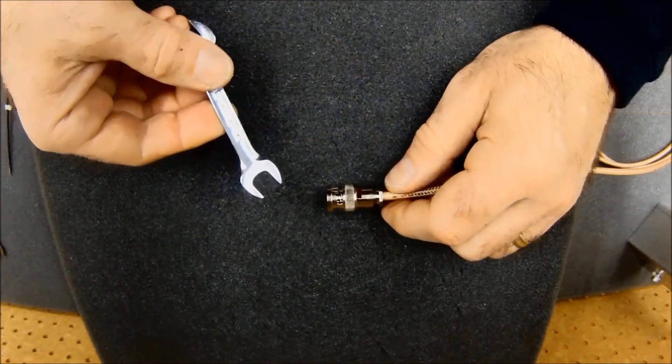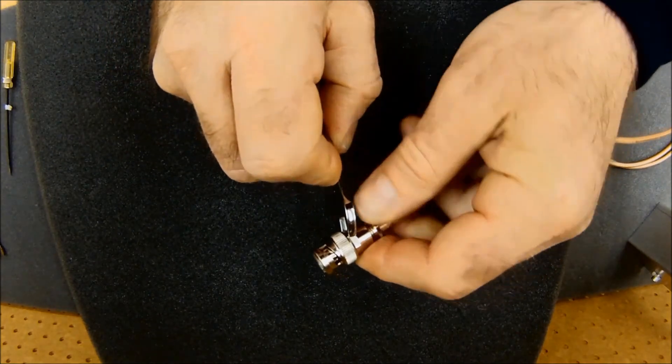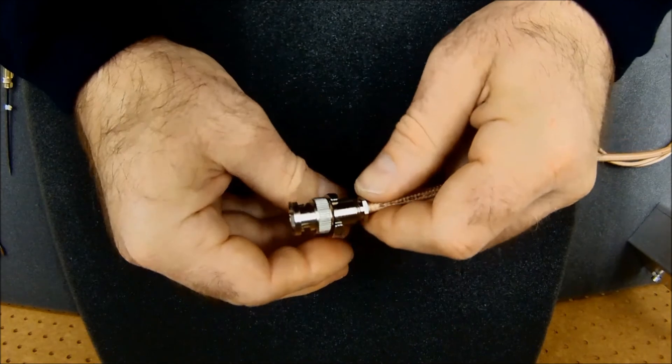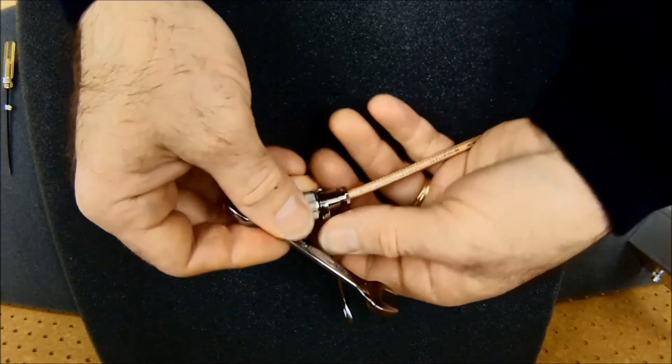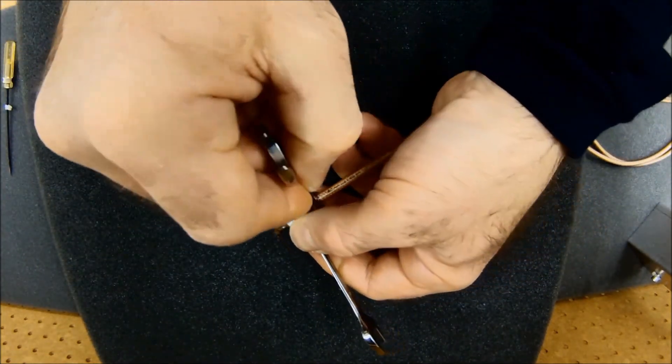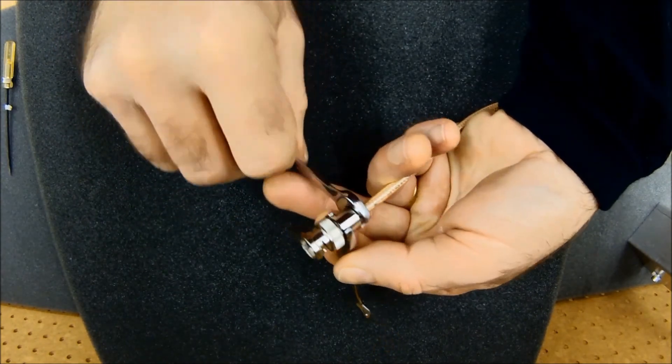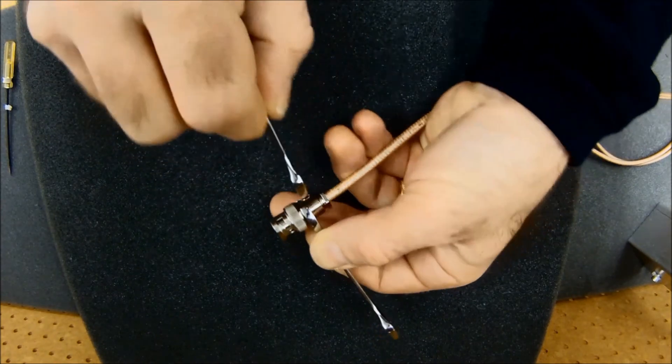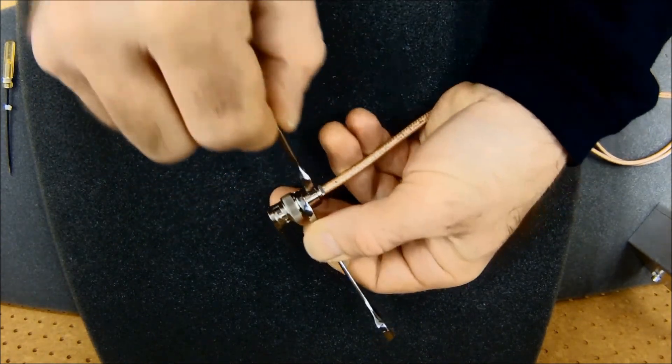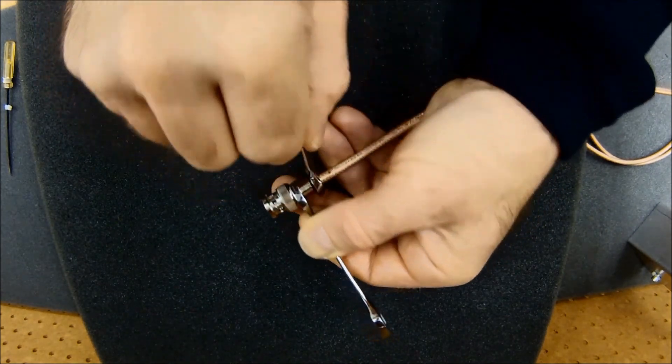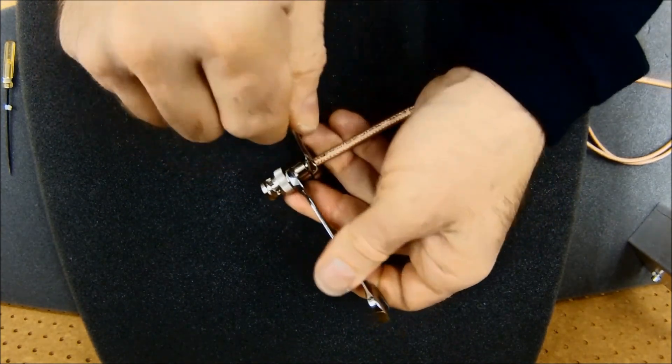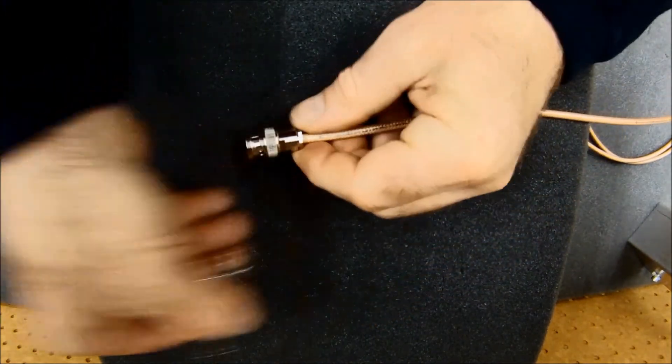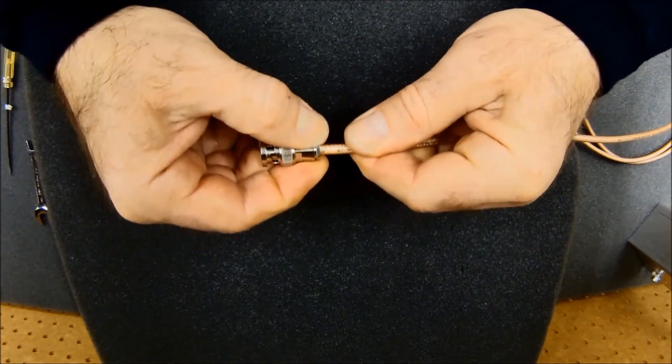Now at this point what I'm going to do is I'm just going to take a pair of 3 eighths inch wrenches. Slip one onto the body of the connector and use the other to tighten up the back nut. It's important not to over tighten this back nut or it ends up cutting off strands of that braid. So just bring it down until it's good and snug. It's got a little bit of pressure on the gasket. And this is rock solid. It won't pull off.